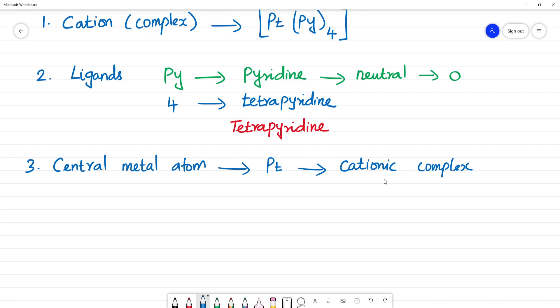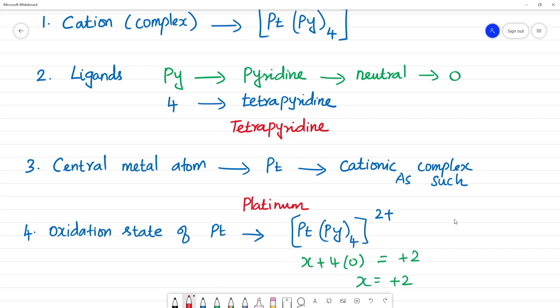We have to name as such. Next we name platinum. Next, we calculate oxidation state. Oxidation state of Pt. We calculate plus 2. Platinum pyridine 4 times, total charge of the complex is 2 plus. If x, 4 times 0, that is equal to plus 2. So x equals plus 2. We denote with Roman numeral. Now we've named the cation, next the anion.